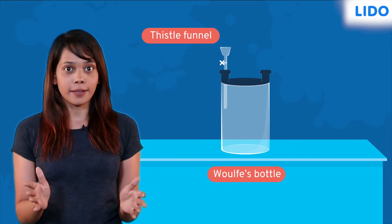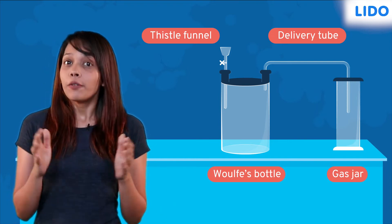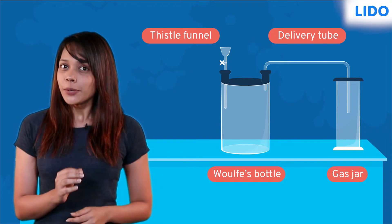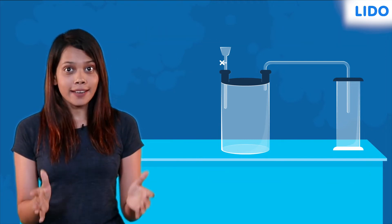We will need a Walz bottle, a thistle funnel, a delivery tube and a glass jar. A Walz bottle is a double mouth glass apparatus used in a chemistry lab to prepare gases.